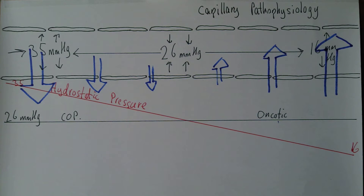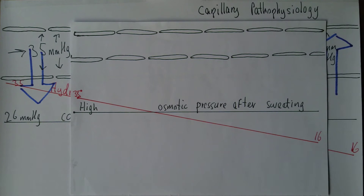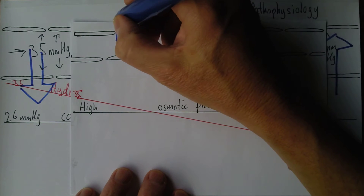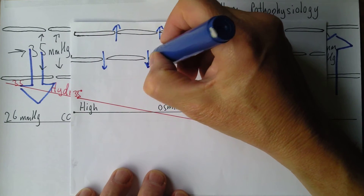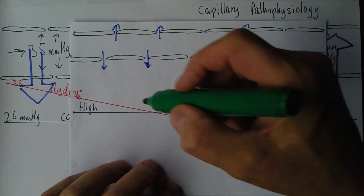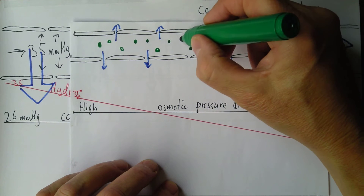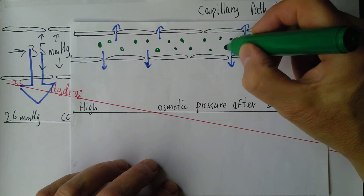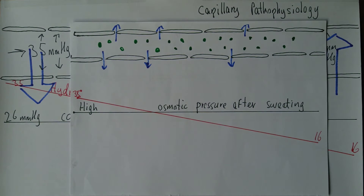Now I want to consider some abnormal situations. The first one is about sweating. If someone has been sweating a lot, sweat is made from water, so they will have lost water from their circulatory system. If there's less water in the blood, the plasma proteins are going to be relatively more concentrated — not because there are more plasma proteins in total, but because there's less water to dissolve them in.